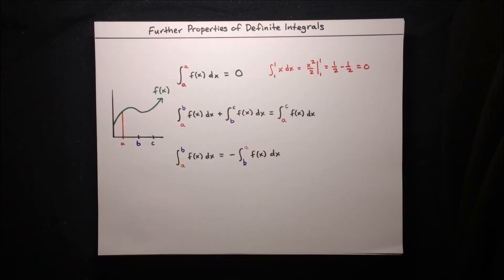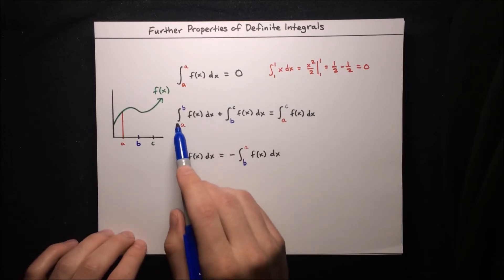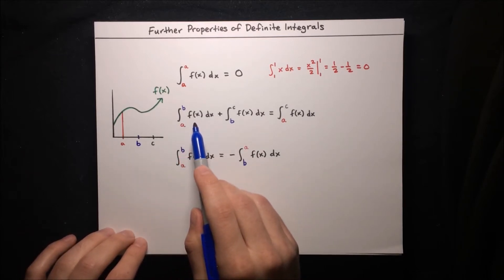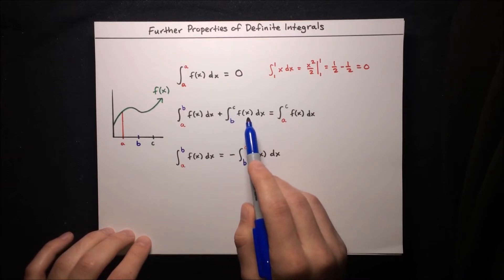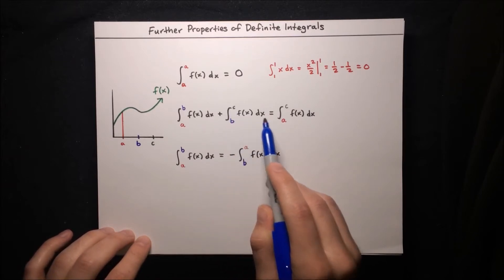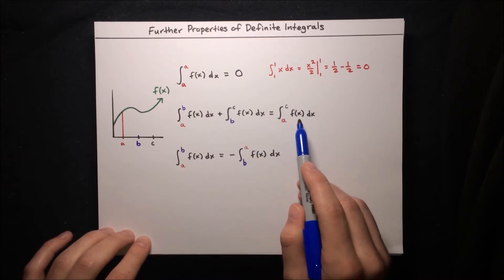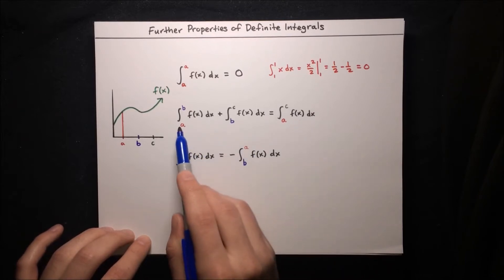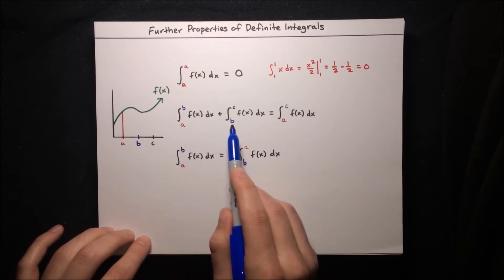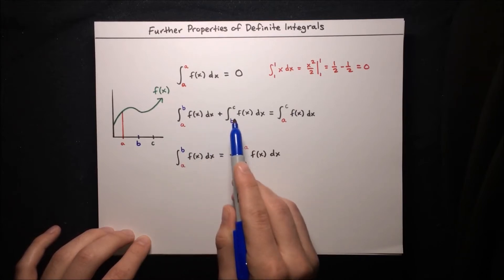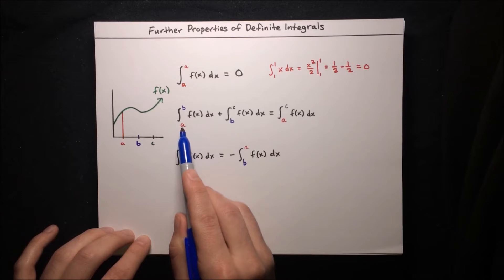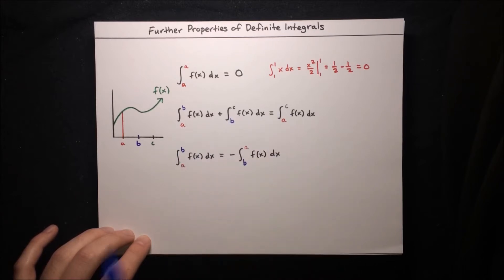On to the next property. The integral from a to b of f(x) dx plus the integral from b to c of f(x) dx is equal to the integral from a to c of f(x) dx. It's like if you have a bound on the top and bottom of the integral sign that are the same, you can combine the two integrals together using the other bounds — a on the bottom and c on the top.